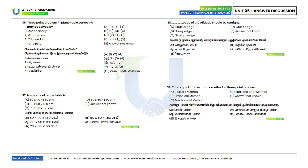Thirty-sixth question: The three-point problem in plane table surveying may be solved by which methods? It can be solved by mechanical, graphical, and trial and error methods. Options 1, 2, 3 — option D is the correct answer.